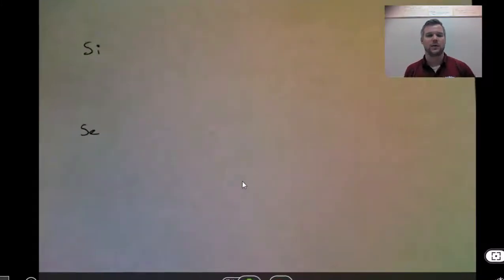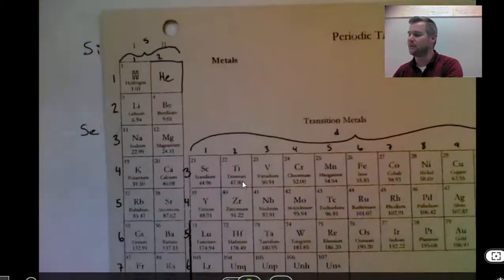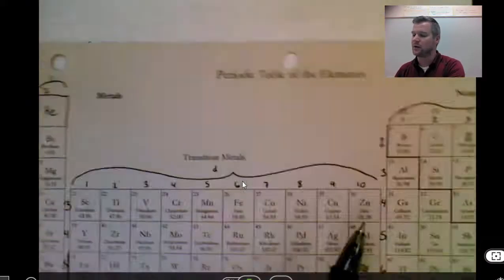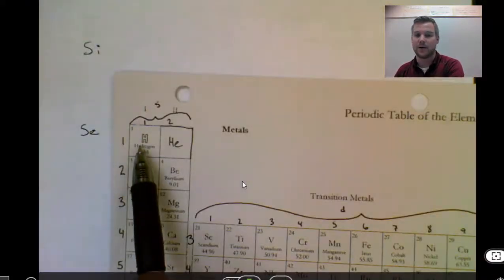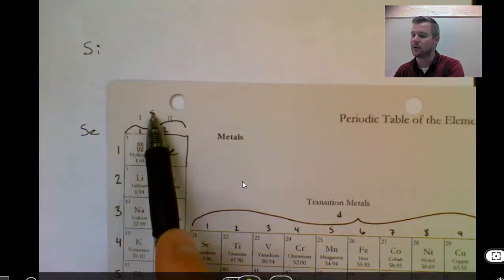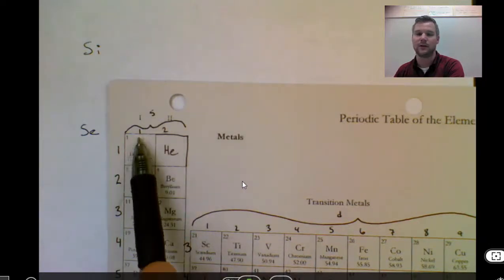If we're going to do the electron configuration for silicon, I need to look at my periodic table. And I'm going to start by finding silicon over here. This is where I need to stop counting squares. I'm going to start counting squares, though, at the hydrogen square. And I'm going to read the number to the left, 1. Then I'm going to read the letter above, S. And then I'm going to read the number above each column.